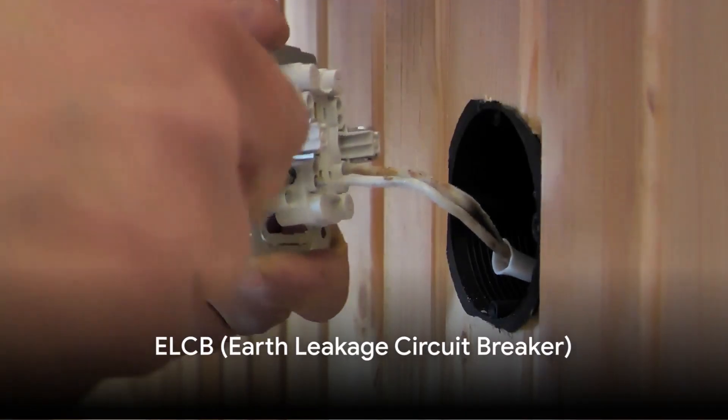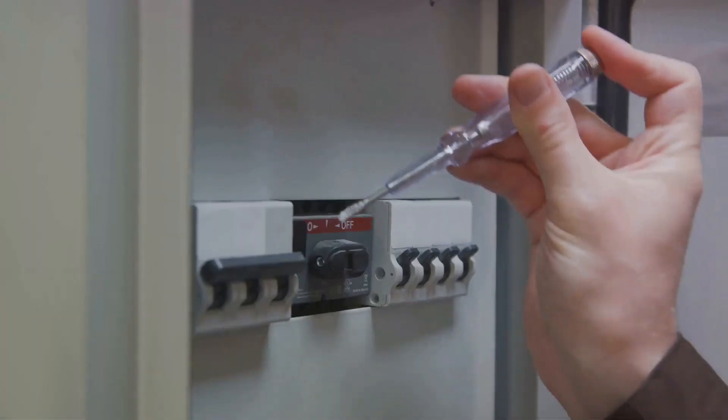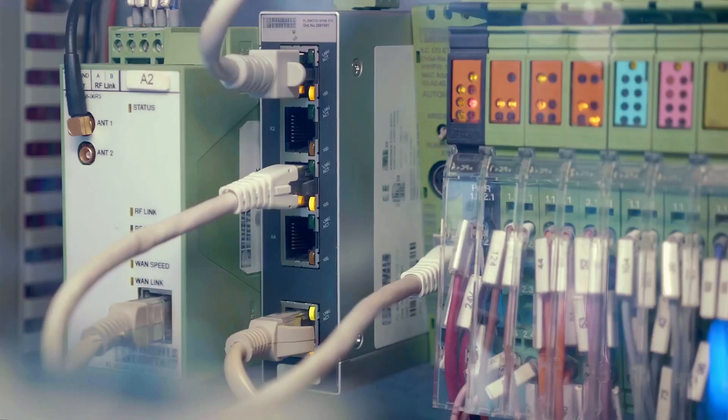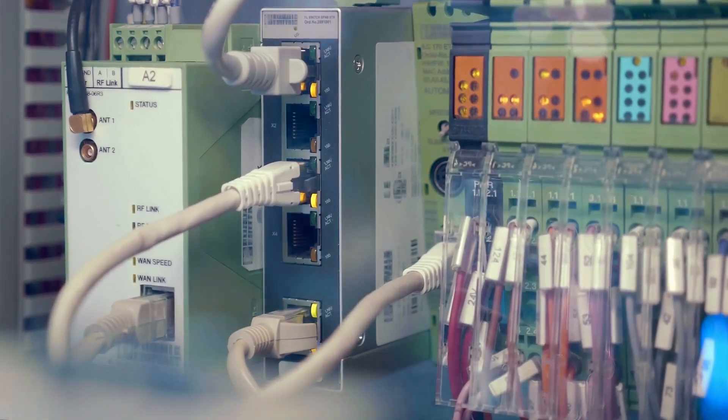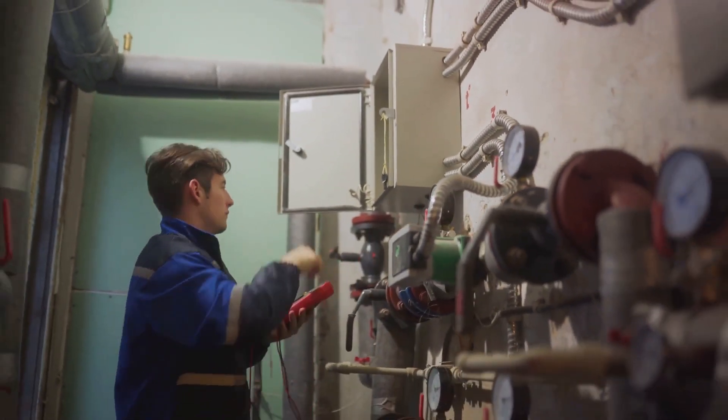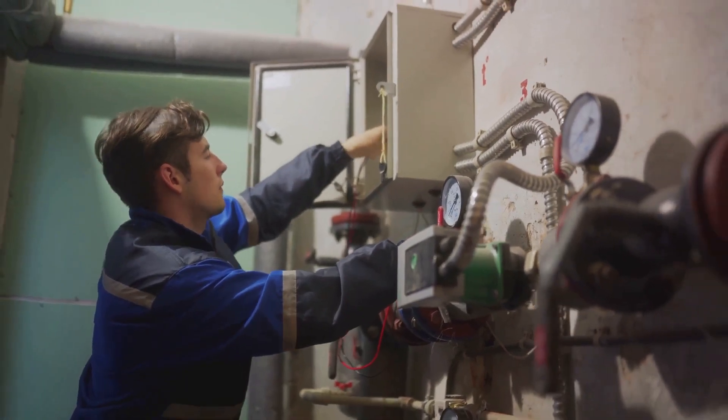Next, we have the ELCB or Earth Leakage Circuit Breaker. Much like the RCCB, the ELCB is designed to protect against electric shock. However, its operation is slightly different. The ELCB works by comparing the current flowing in the live wire with the current returning through the earth wire. If it detects an imbalance, it trips, cutting off the power supply. ELCBs are commonly found in older electrical installations.